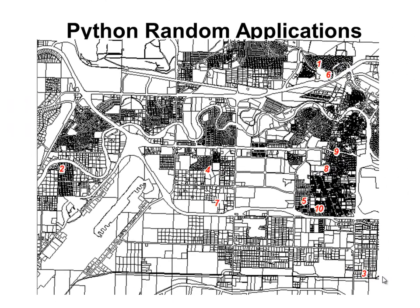Then the next week, we'll use the Python random module for random applications. The applications might be creating random points or random selections. Here's an example: we've got thousands of parcels, and we want to randomly select 10 of them and then label them. Here are the parcels that are randomly selected and labeled based on the Python random module.